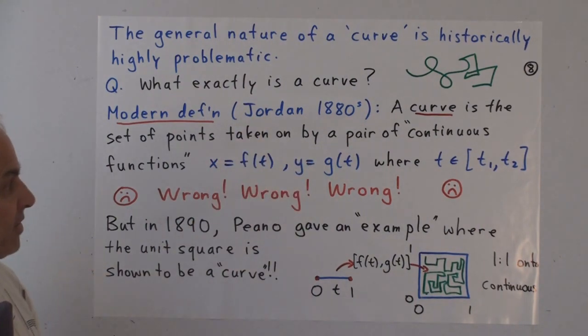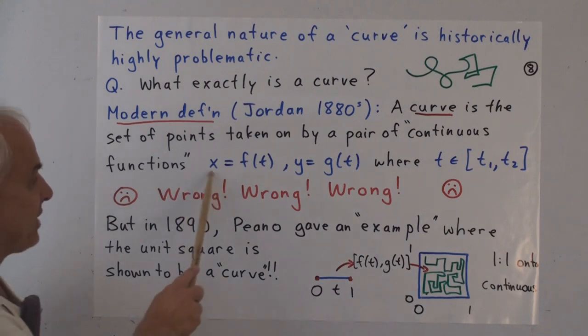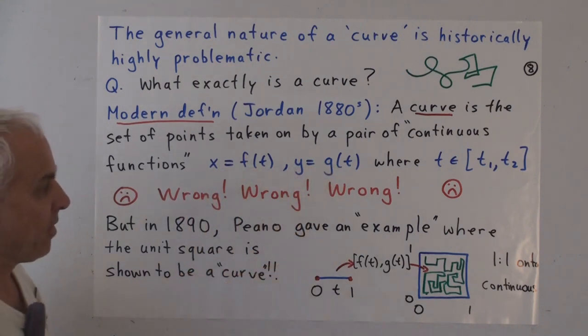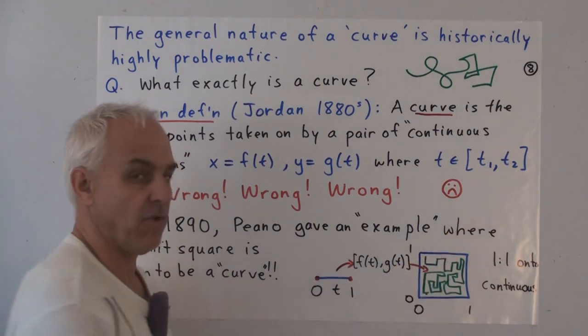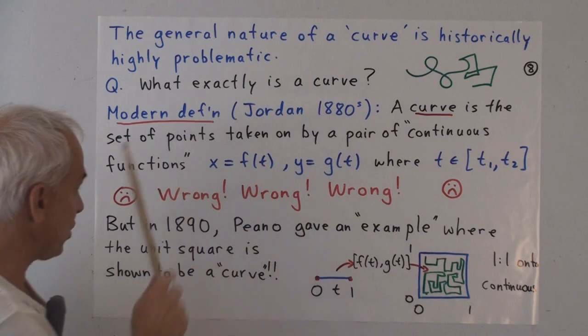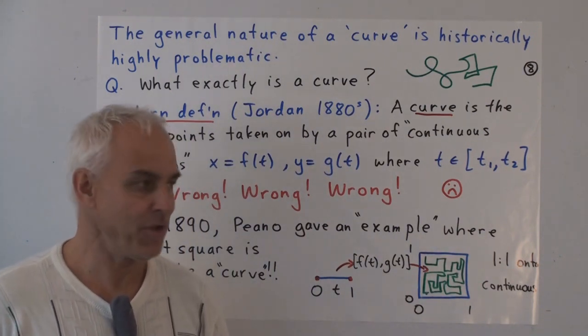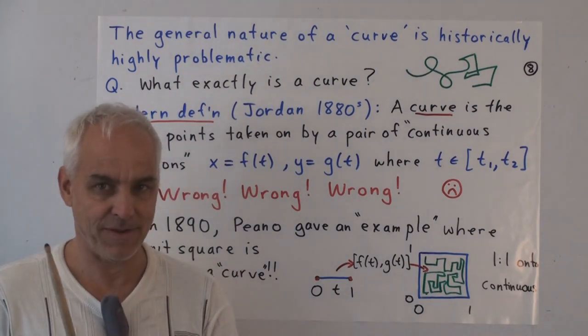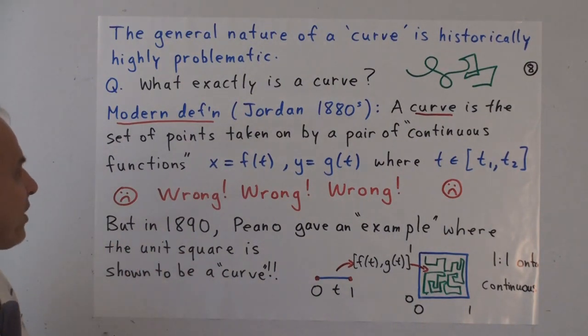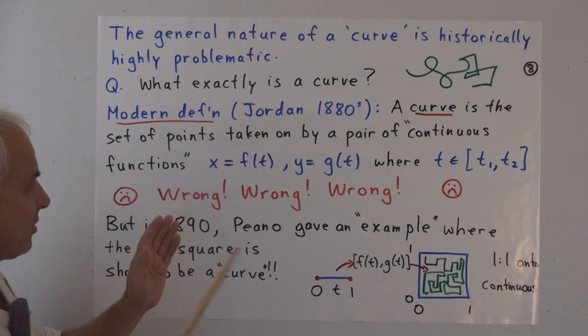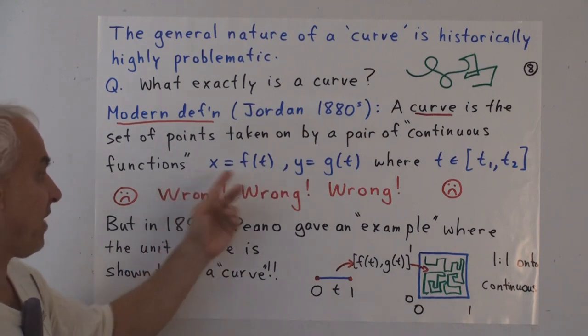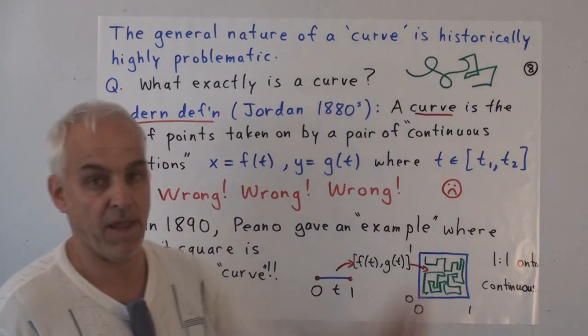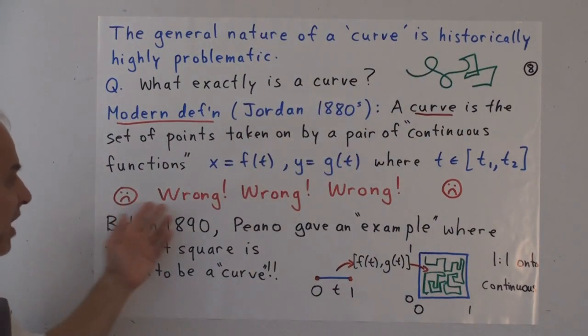It's rather surprising that the modern definition only really took place around the last part of the 19th century. In the 1880s, Jordan gave this following modern definition of a curve. He said that a curve is the set of points taken on by a pair of continuous functions: x equals f of t, y equals g of t, where t ranges through some interval on the real line. I put continuous function here in quotes. He would not have put it in quotes, but I do, because the notion of continuous function is in fact highly problematic, as we'll see later on.